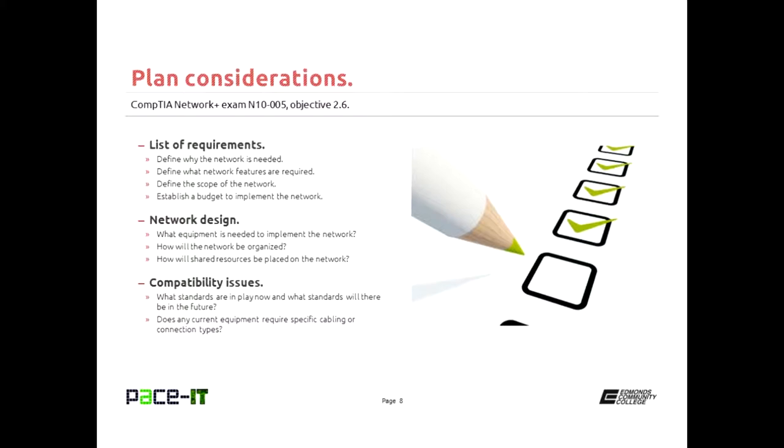Once you define why you need the network, that will help you define what features are going to be required. Then you need to define the scope of the network. How much of the equipment are you going to supply? How much of the infrastructure build out are you going to implement? Or are you going to subcontract it out? And the other thing to go over carefully with your client is a budget. Always establish a budget when you're implementing a network. That really helps to reduce surprises.